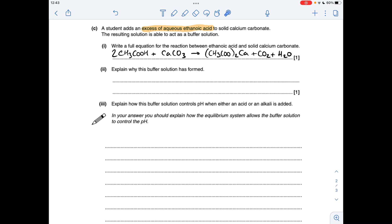Why is a buffer solution formed? You'll see I've highlighted it's an excess of aqueous ethanoic acid. So at the end of this reaction, what are we going to have left? We're going to have some weak acid left. We're also going to have some salt ion there as well. And they are the key components of your buffer solution.